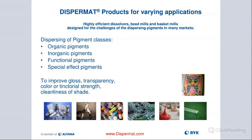There are a lot of different end-use markets for this type of equipment. When we talk about dispersing, we differentiate between different pigment classes: organic pigments, inorganic pigments, functional pigments, and special effect pigments. Those include the silver flake effect colors, which have to be dispersed with more care because you don't want to destroy those special effect pigments.